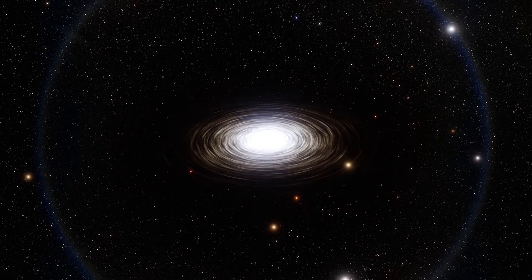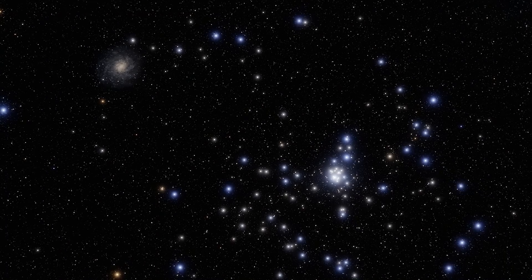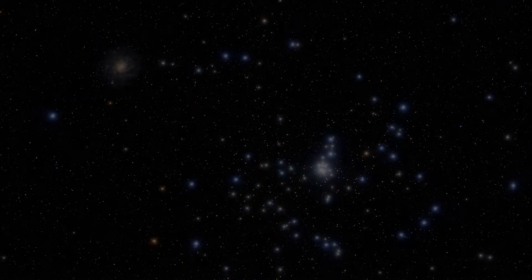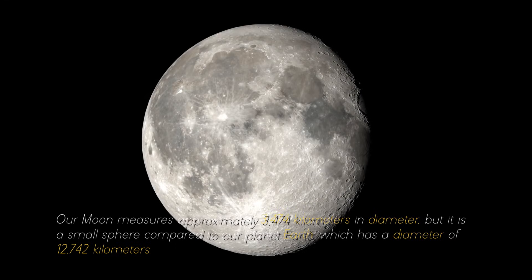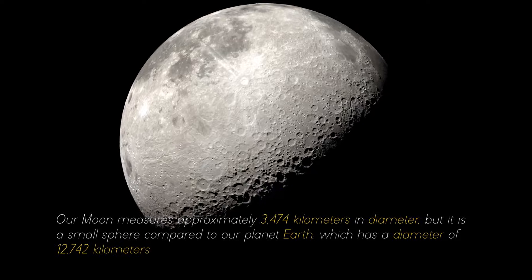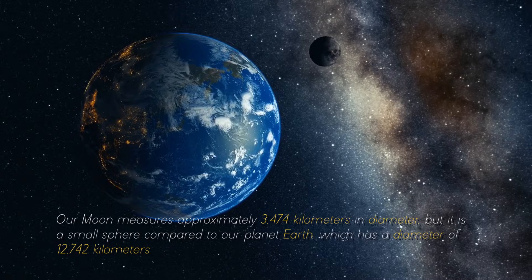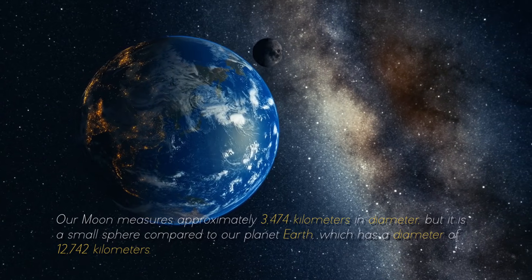To give you an idea of the colossal objects and structures that abound in the cosmos, it is necessary to start at the beginning. Our moon measures approximately 3,474 kilometers in diameter, but it is a small sphere compared to our planet Earth, which has a diameter of 12,742 kilometers.